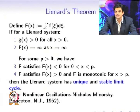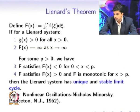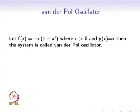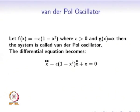For reference, see the book Non-Linear Oscillations by Nicholas Minorski. Now let f(x) = –ε(1 – x²), where ε > 0, and g(x) = x. Then the system is called the Van der Pol oscillator, and Liénard's equation transforms to x_ddot – ε(1 – x²)·x_dot + x = 0.